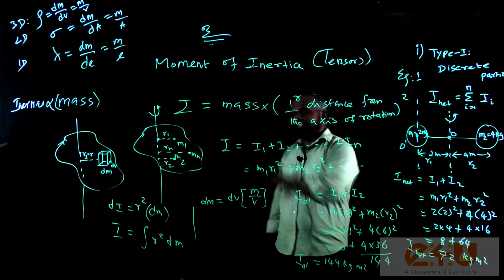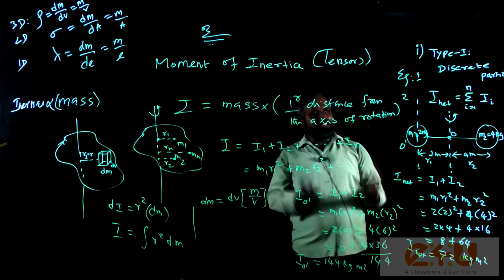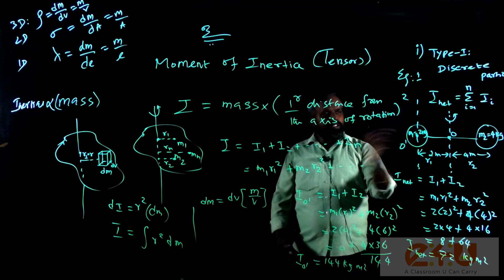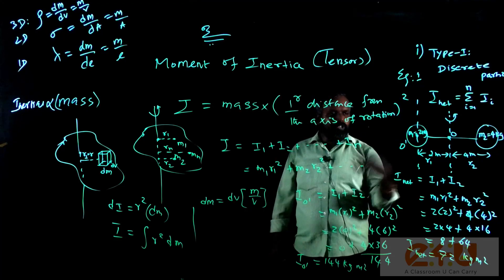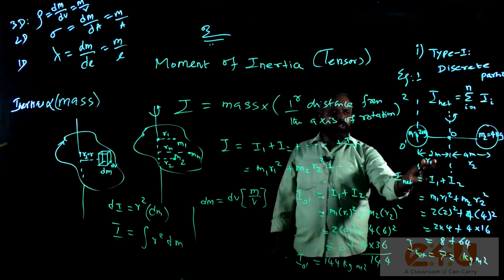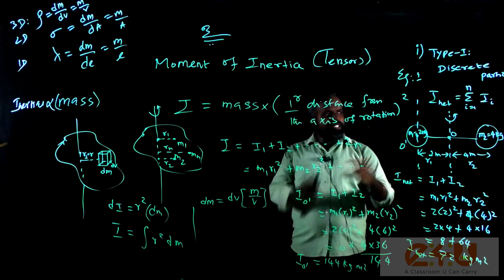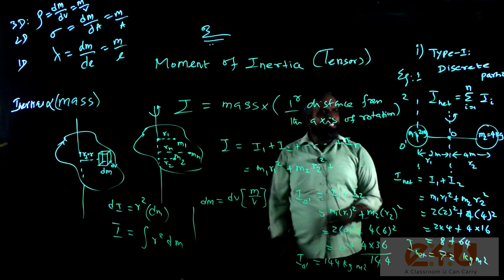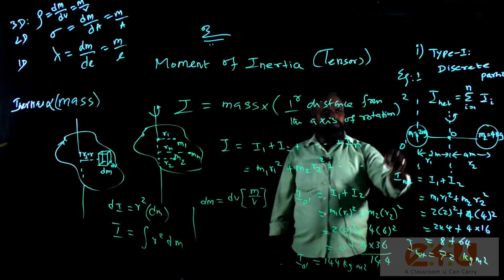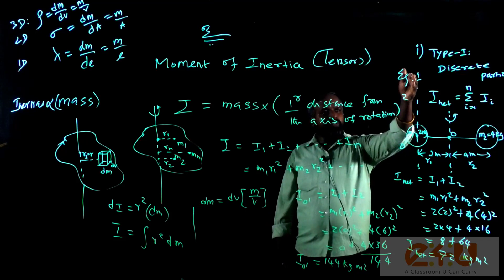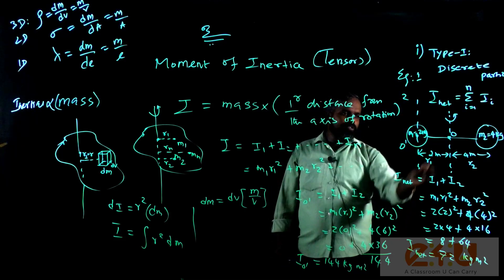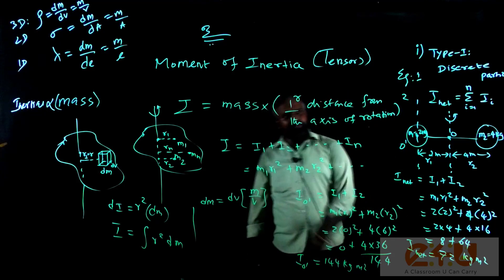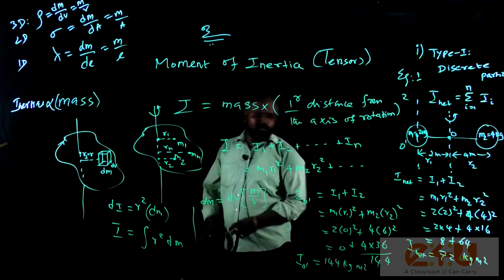Note: for a distributed rigid body like a solid sphere or disk, we don't set the perpendicular distance to zero even if the axis passes through material, because mass is spread over an area or volume. But for point masses, any mass lying exactly on the axis has perpendicular distance R = 0 and contributes nothing to the moment of inertia. This concludes Type 1 problems; we now move on to Type 2.